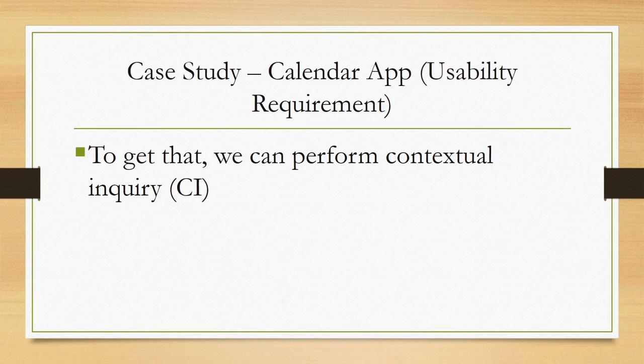Usability requirement is one sort of non-functional requirement along with many others. However, our main focus here is only usability requirements, so we are not going to discuss other non-functional requirements for the app. In order to gather these requirements we need to perform certain activities. There are different ways to gather requirements, as we have learned earlier. One of those which we have discussed in detail in an earlier lecture is contextual inquiry. For our example system, let us assume we are going to perform a contextual inquiry and based on some hypothetical data, see how we can get the usability requirements.